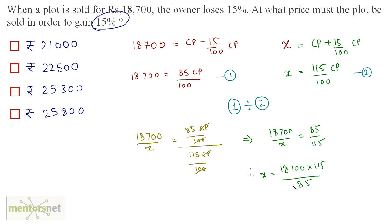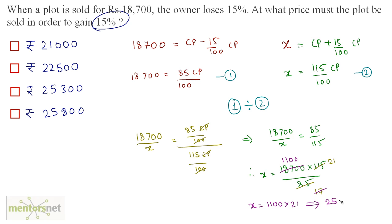Therefore X equals 18,700 times 115/85. Since 5 times 17 is 85 and 5 times 23 is 115, dividing 18,700 by 17 gives 1100, so X equals 1100 times 23, which equals 25,300. So the answer is option C.